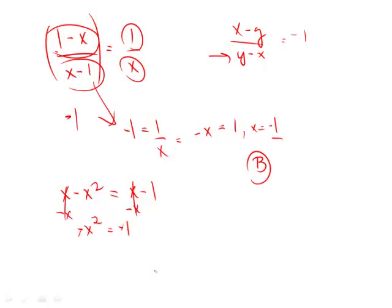We can drop the negatives from both sides, so we get x squared is equal to 1, and so therefore x is equal to 1 or negative 1.